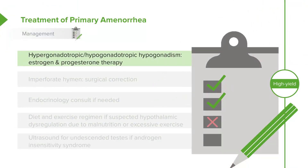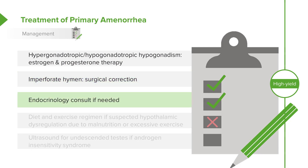How do we treat primary amenorrhea? If a patient has either hyper- or hypogonadotropic hypogonadism, we usually start the patient on oral contraceptive pills to regulate the cycle and standardize hormonal fluctuation. If they have an imperforate hymen, this requires surgical correction — in fact, it's fairly emergent.